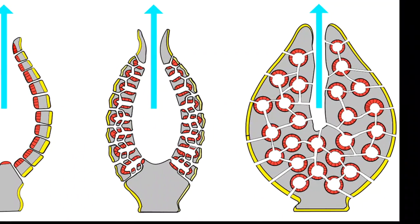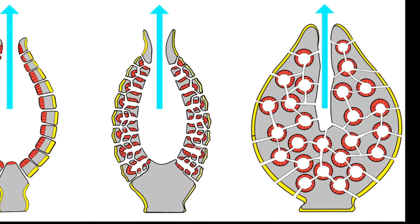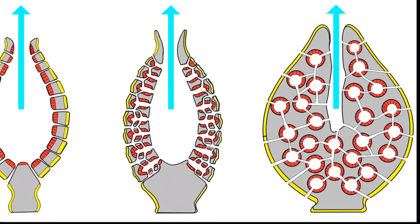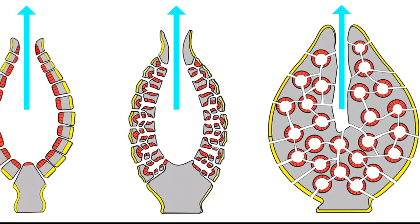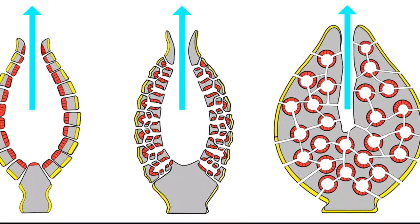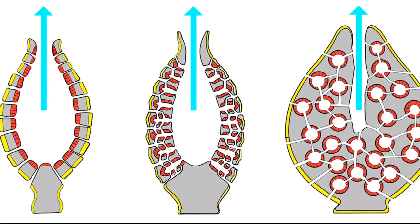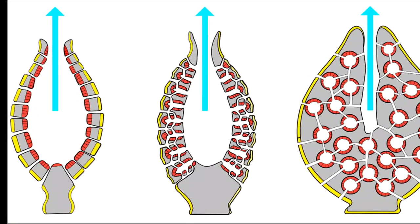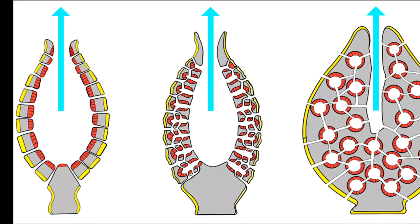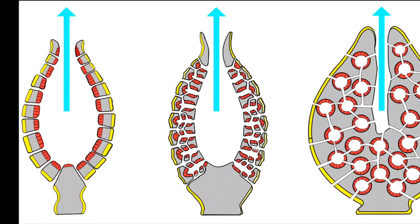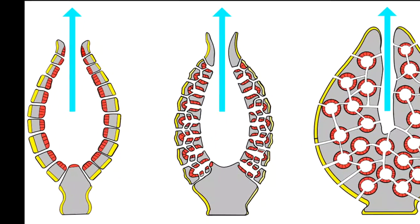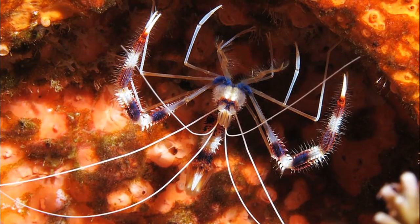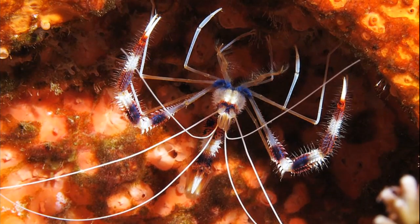The structure of many species, which consists of a network of canals and chambers with flowing water, allows for the creation of microhabitats, hosting a variety of flora and fauna such as shrimp or hydrozoans.